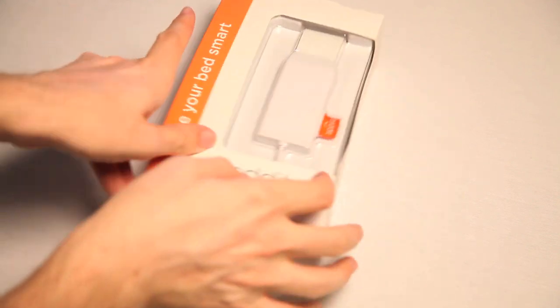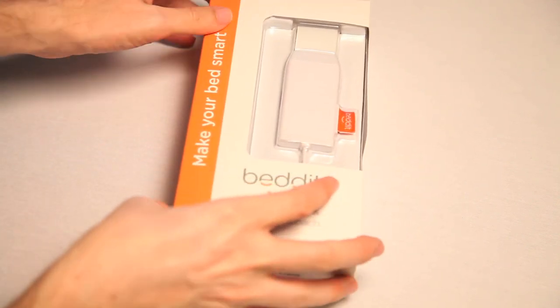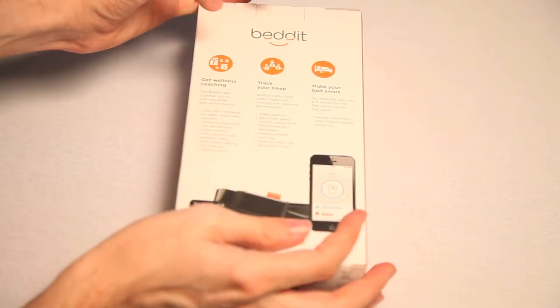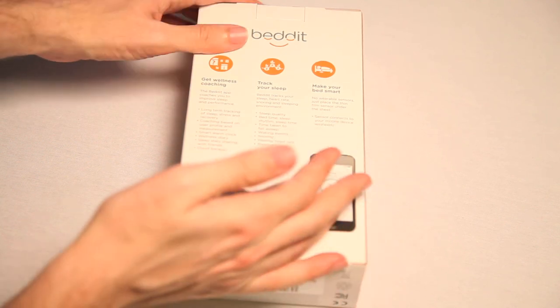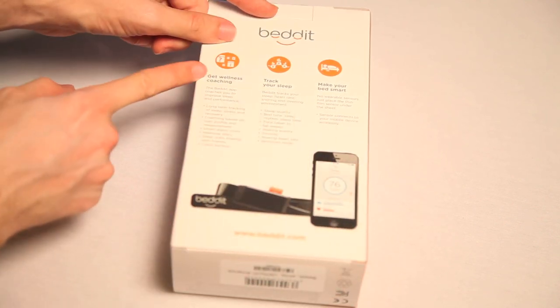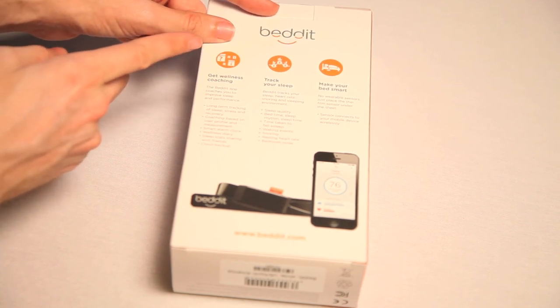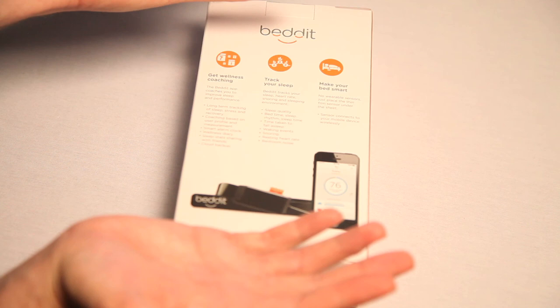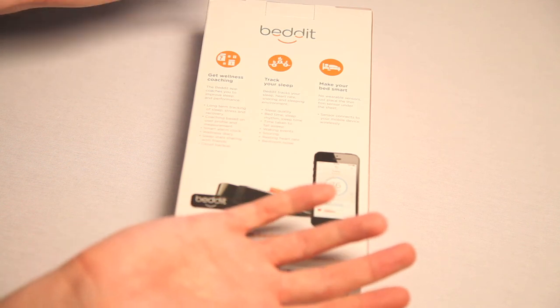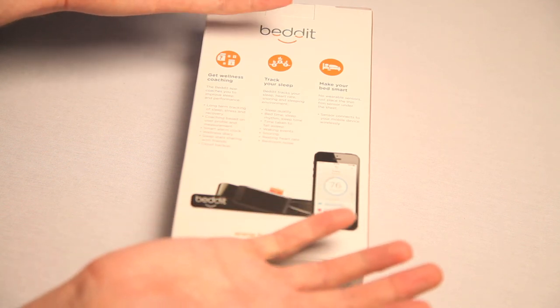Make your bed smart. I don't know about that. And then it's going to be getting sandwiches in the middle of the night and not sharing any with me. So what it does, you get wellness coaching. The Bed-It app coaches you to improve sleep and performance. Long-term tracking of sleep, stress and recovery. What's it doing? Like putting gas in your brain to make you have better dreams?